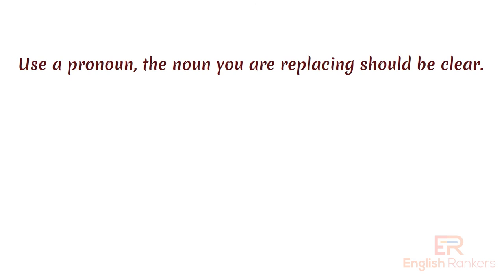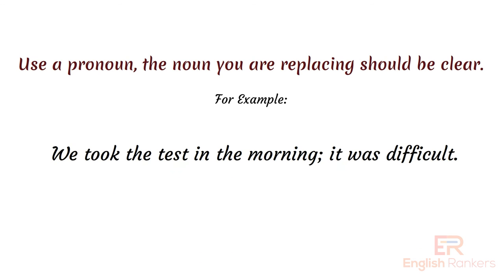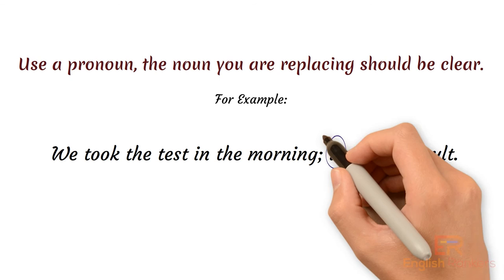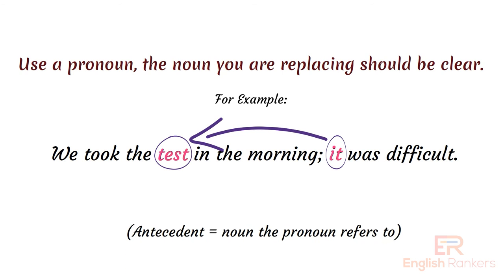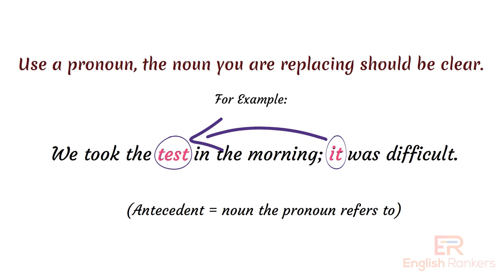Whenever you use a pronoun, the noun it refers to should be clear. For example: 'We took the test in the morning. It was difficult.' Here 'it' refers to 'test' — 'test' is the antecedent of 'it'. In your writing, you should always have a clear antecedent. An antecedent is the noun or pronoun that the pronoun refers to.